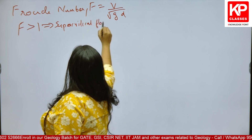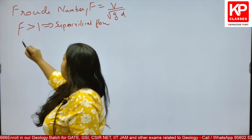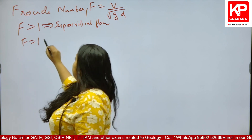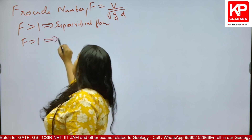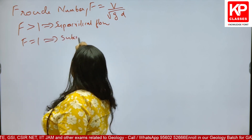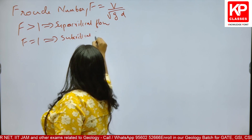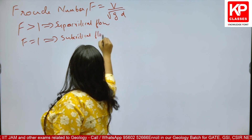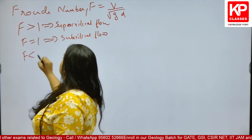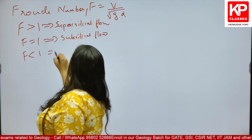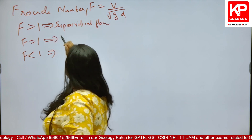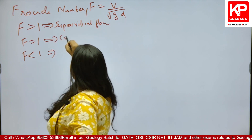In the same way, if Froude number value is coming equal to 1, we call it as critical flow. If F comes less than 1, we call it as subcritical flow.